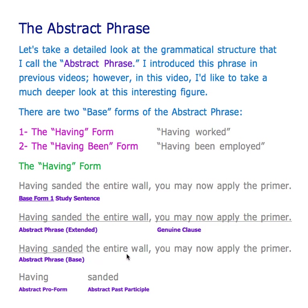In 'Having sanded the entire wall, you may now apply the primer,' having sanded is our abstract phrase in its simplest base form. Having is your abstract pro form, and sanded is your abstract past participle.